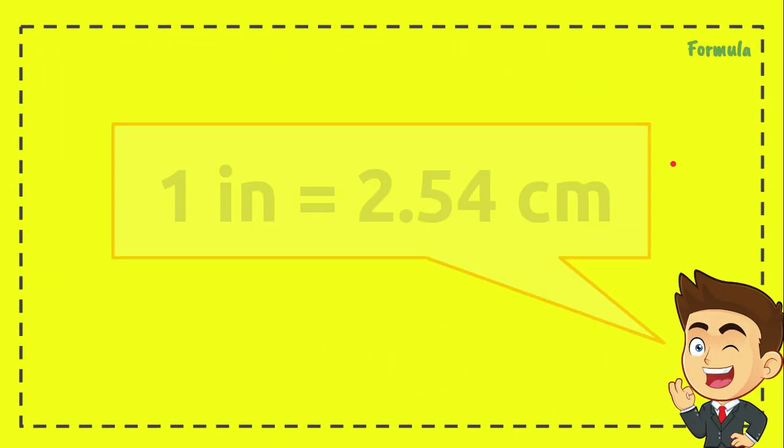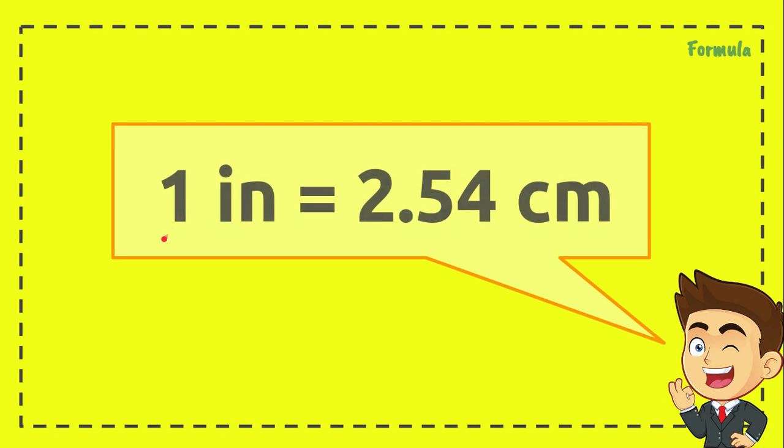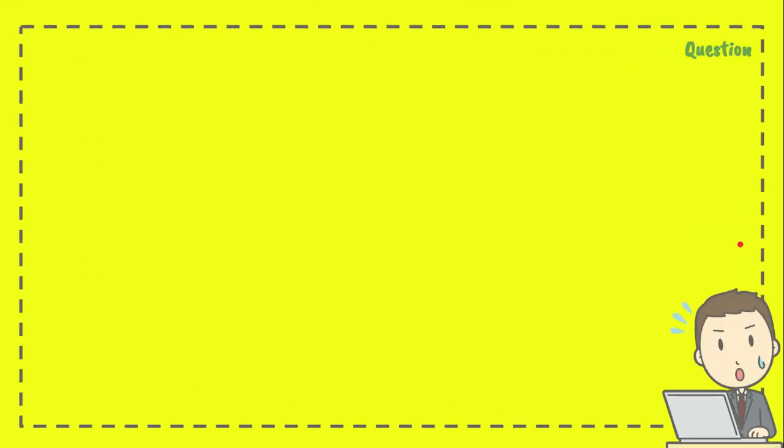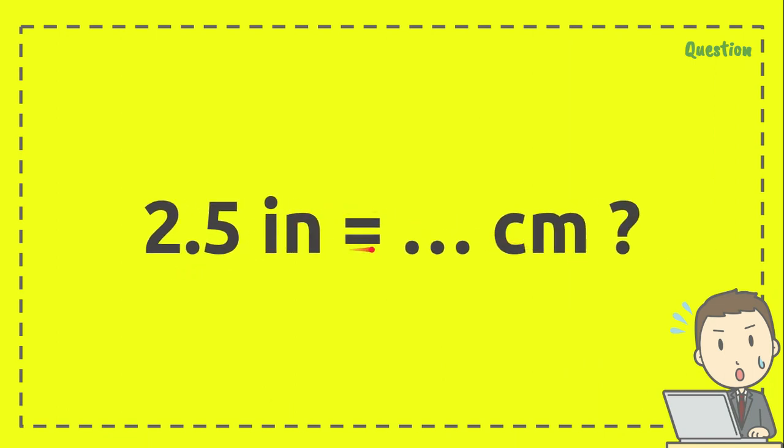Before we solve the problem, we need to know the formula or the conversion factor from inches to centimeters, which is 1 inch equals 2.54 centimeters. Now here is the question: 2.5 inches equals how many centimeters?